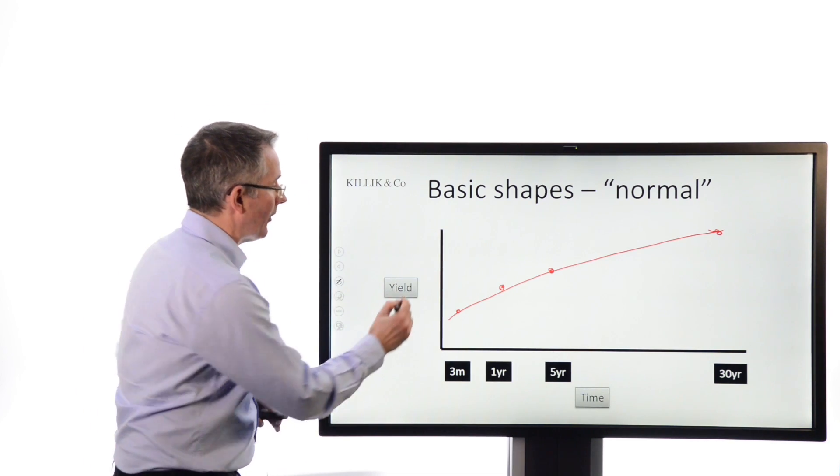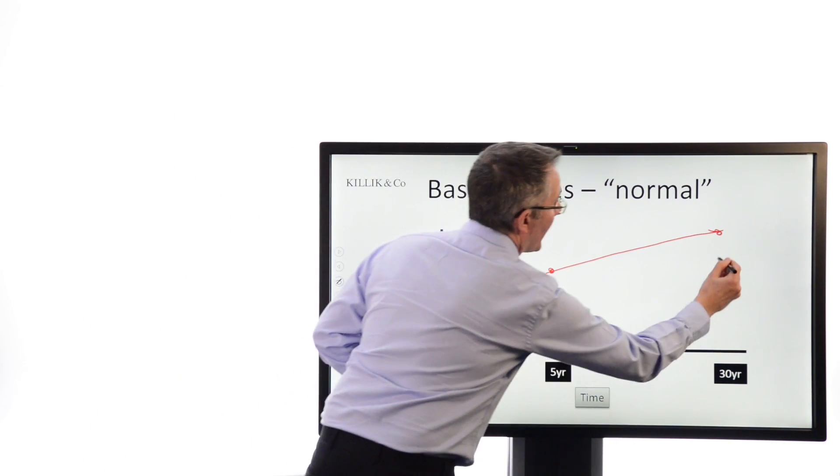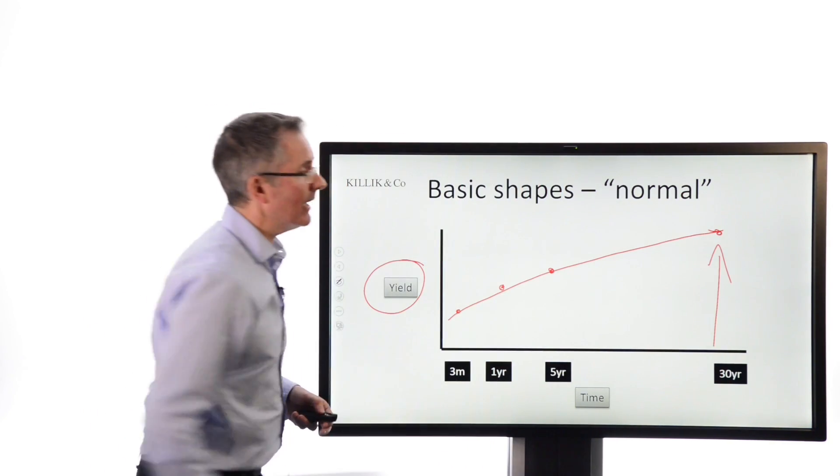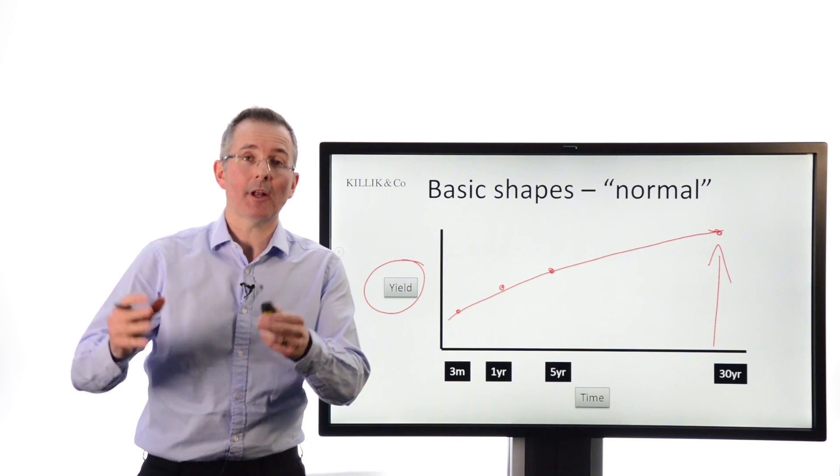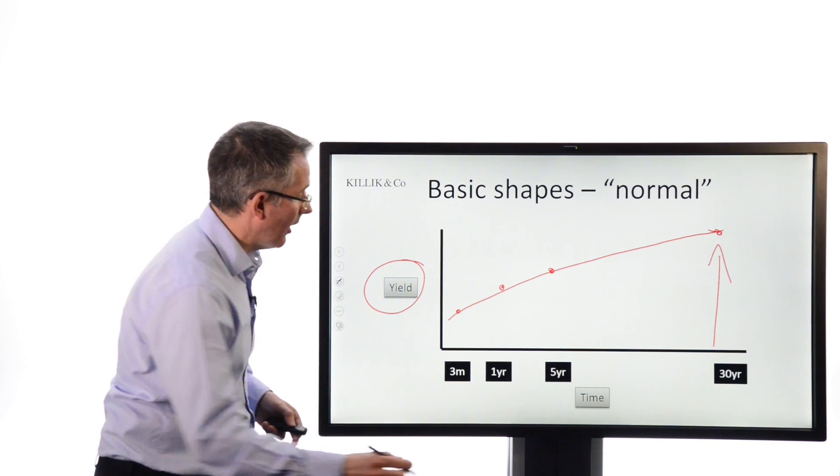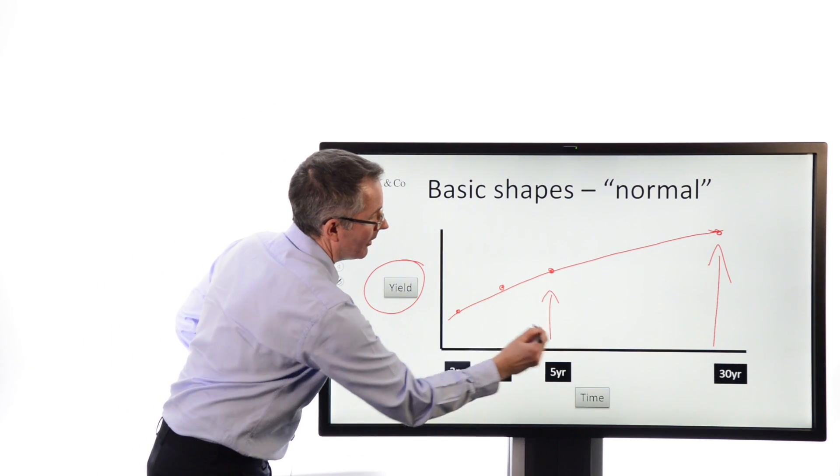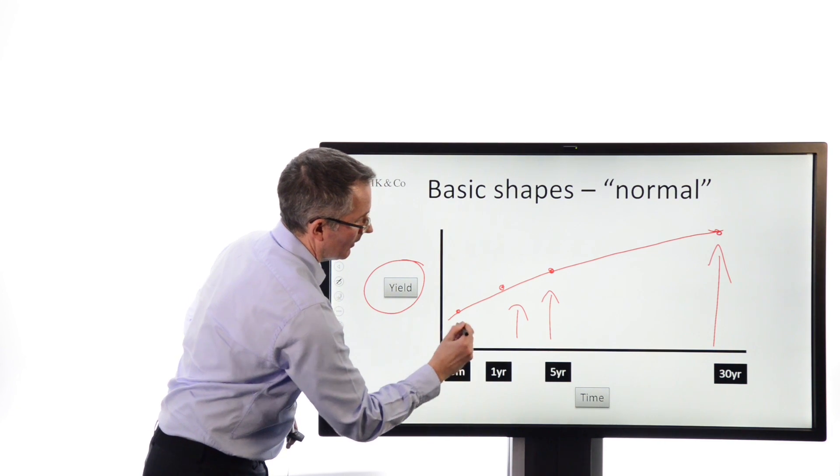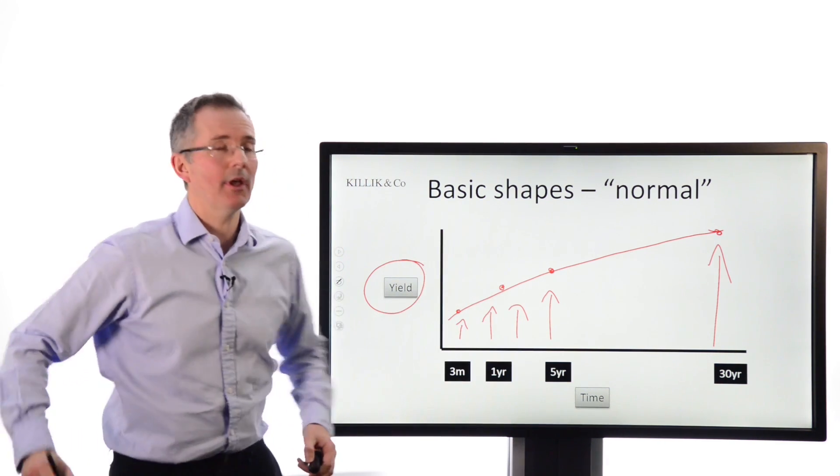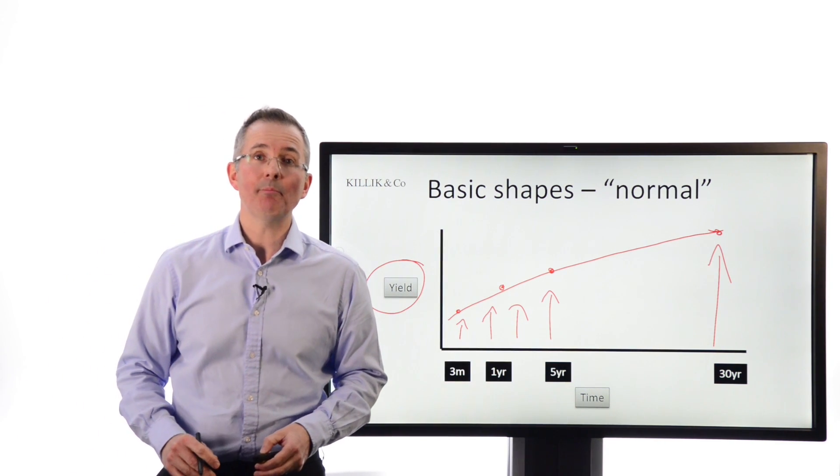In other words, investors are demanding a higher return annually for investing with something like a government over 30 years than they are for investing over five, three months, or one year. That's the kind of relationship you'd normally expect to see.